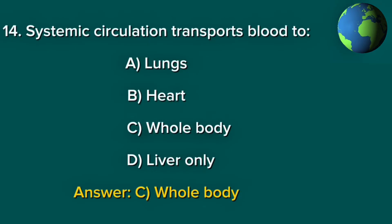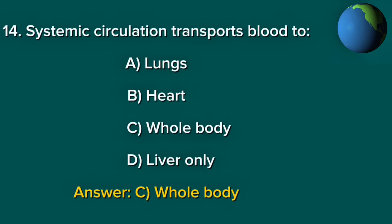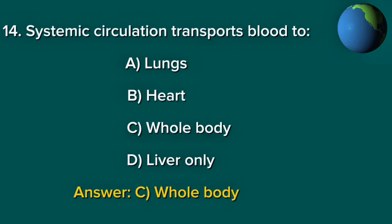Question 14. Systemic circulation transports blood to? A. Lungs. B. Heart. C. Whole body. D. Liver only. Answer: C. Whole body.